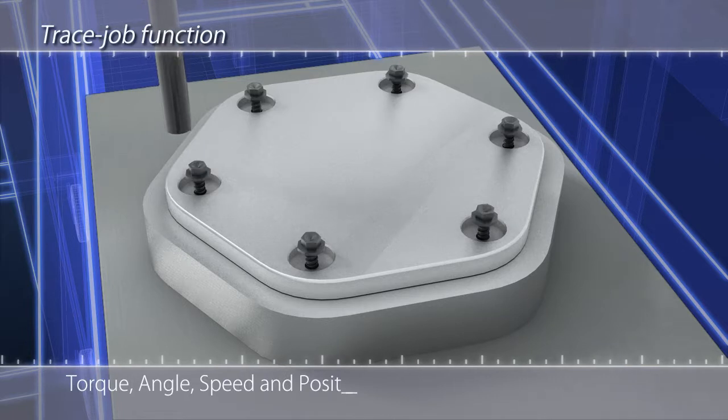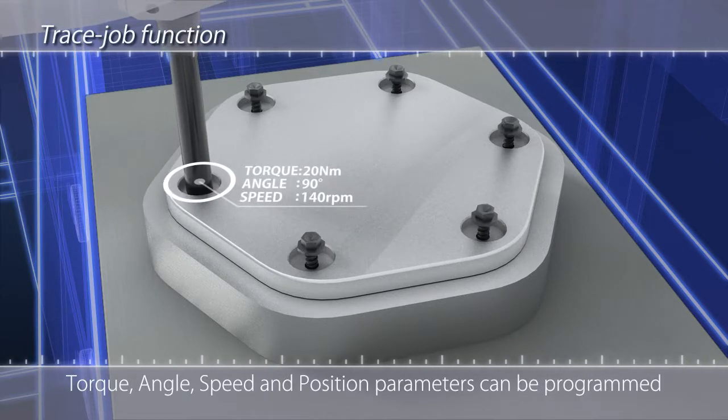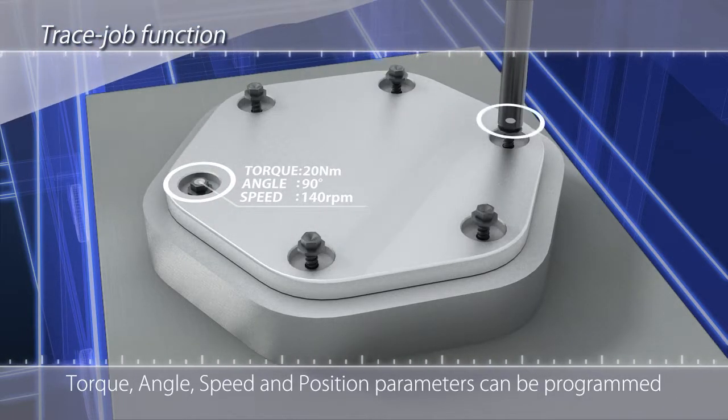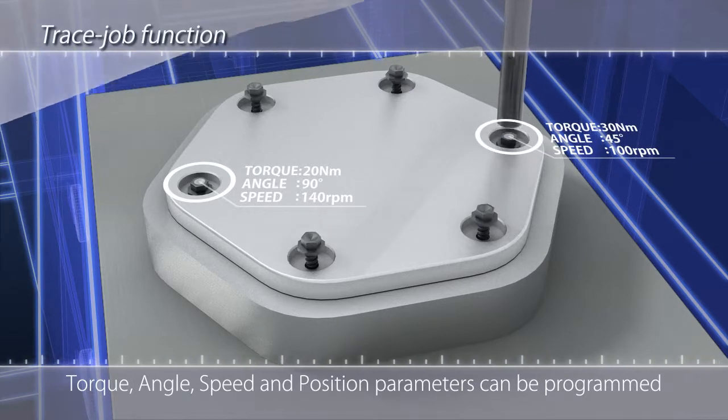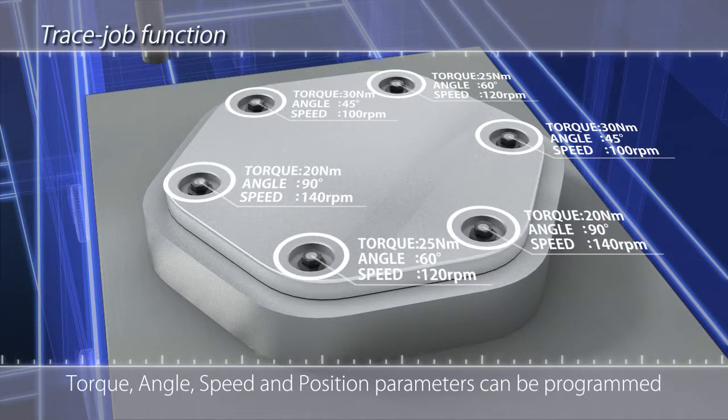Because the torque, angle, tightening speed and other parameters are all preset for each tightening location, all that's required for error-free tightening work is to simply move the Handy2000 to each position.